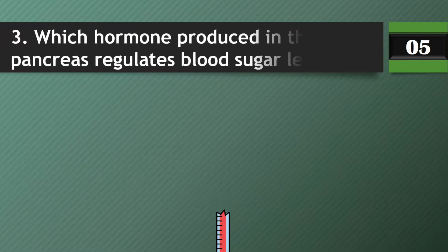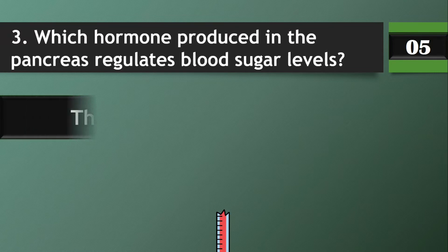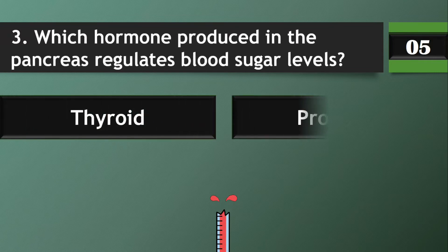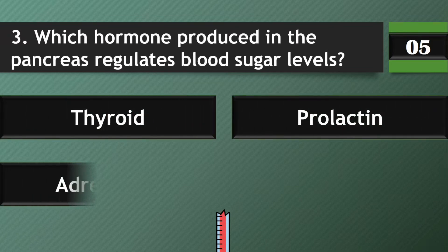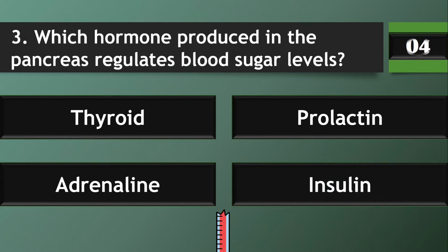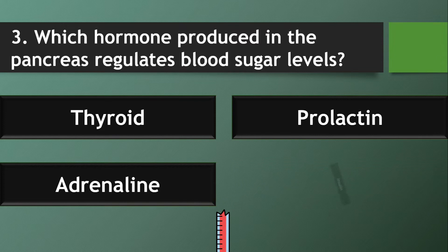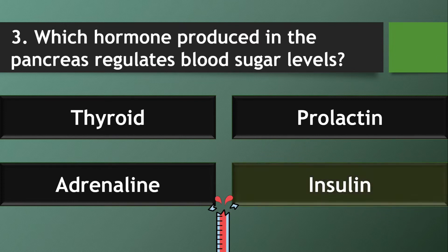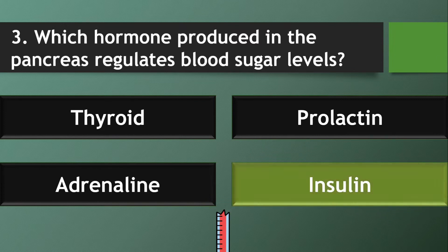Question 3: Which hormone produced in the pancreas regulates blood sugar levels? Answer: Insulin.